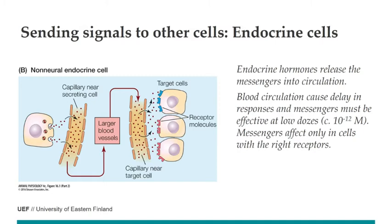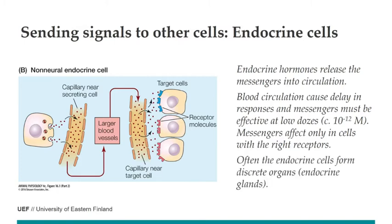In the human body we have about five liters of blood, meaning it will take more time to get the signal to the target cell. Also, diluting hormones in five liters means the concentration can be quite low — even in picomoles per liter. Although the messenger is circulating all around the body, it only affects places where there are receptors. These receptors must be very sensitive, sensing one or two picomoles per liter of signaling molecule, and also very selective.